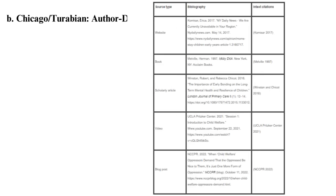The Chicago/Turabian author-date method, on the other hand, is mainly used in natural, social, and physical sciences and hence is known as the social science style. Unlike the footnote method, this style uses in-text citations with parentheses that show the author's last name and publication date. The following demonstrates how to reference and cite according to the author-date method for the most widely used reference sources.